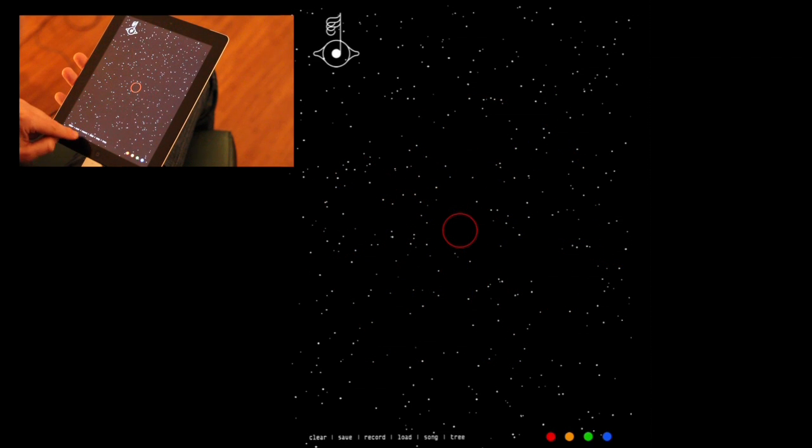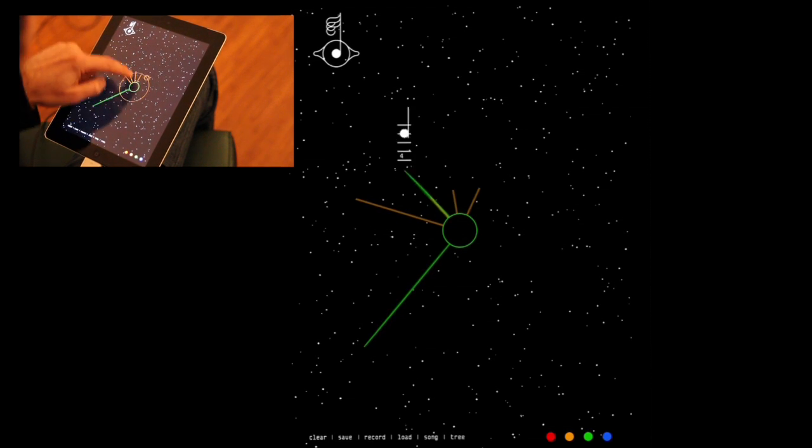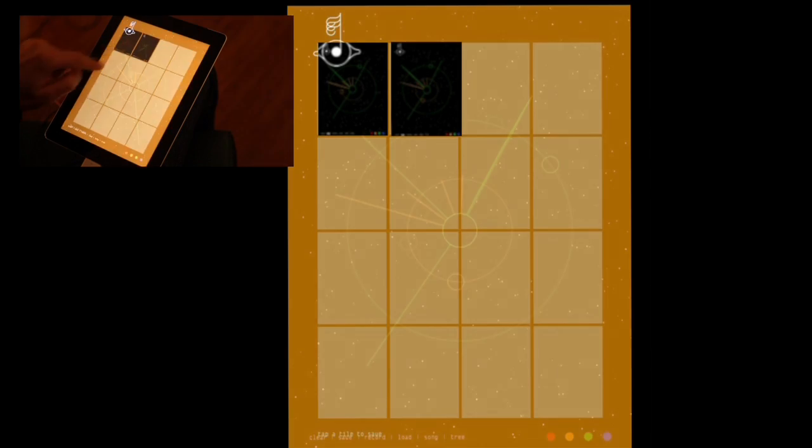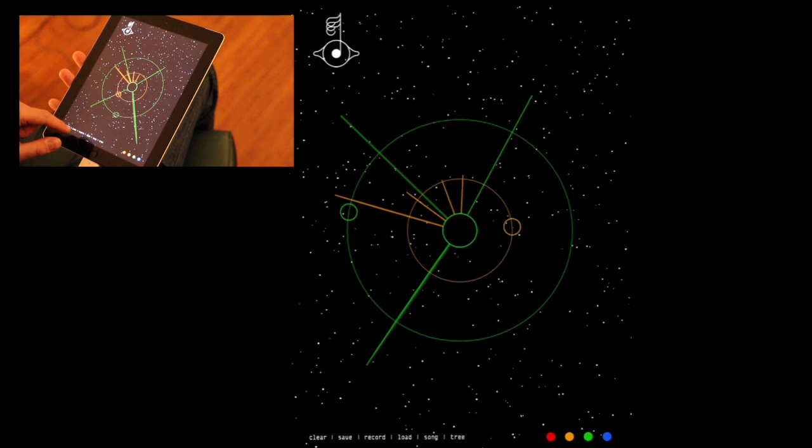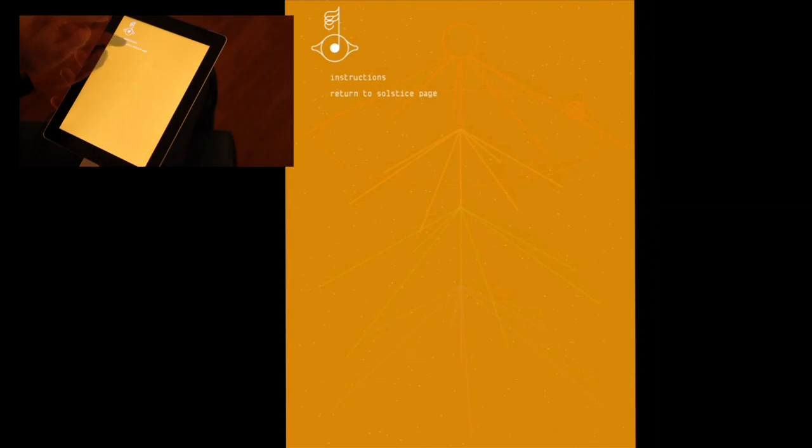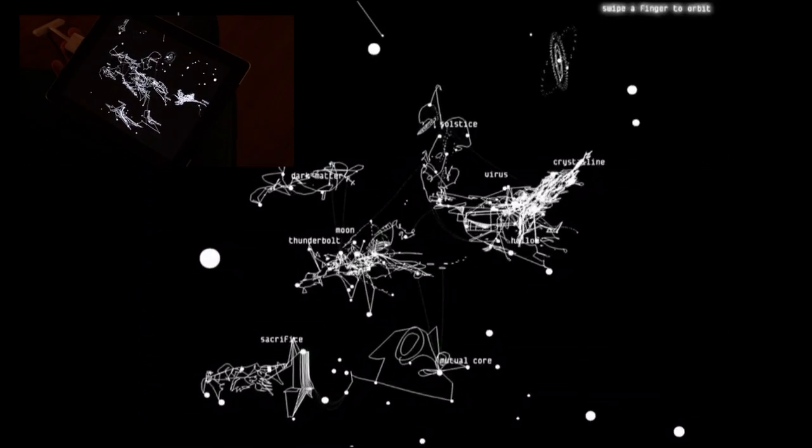Let's clear and create another song. You can see you can build up a whole repertoire of different melodies. Then we can return to the solstice page - we're back into landscape - and then we return to the galaxy.